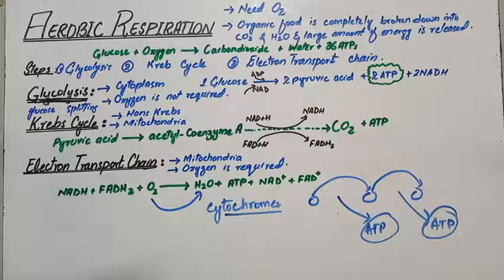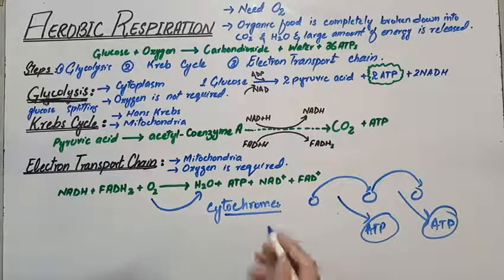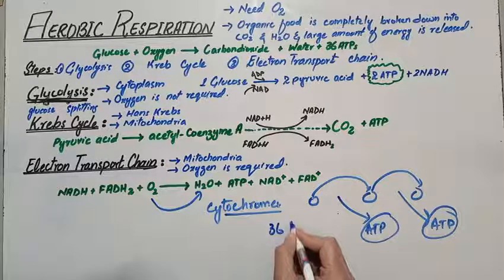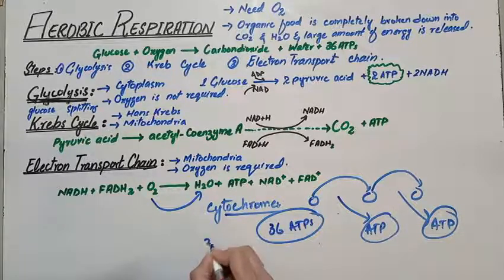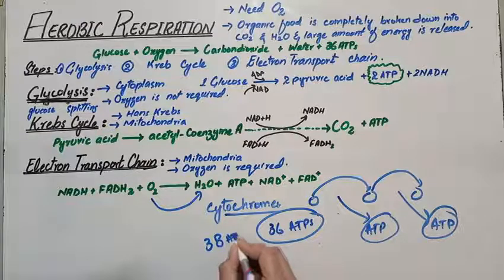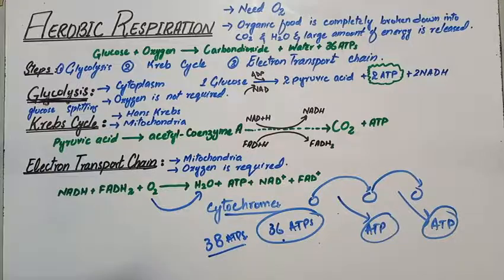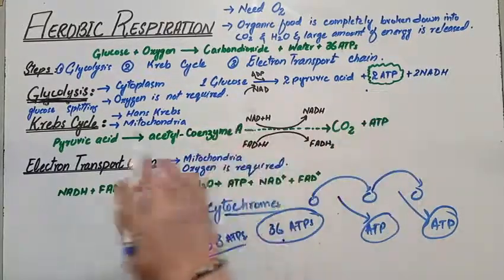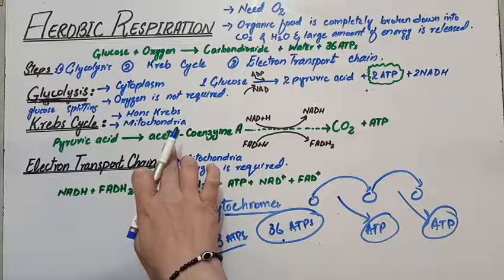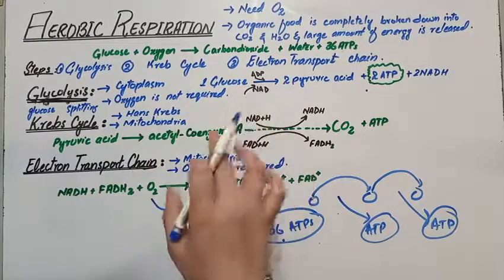This mechanism completes aerobic respiration with a net gain of 36 ATPs. Overall you get 38 ATPs, but the net gain is 36, because 2 ATPs are used for acetyl coenzyme A to enter the mitochondria.